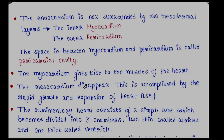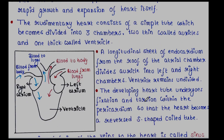The myocardium gives rise to the muscles of the heart. The mesocardium disappears, accomplished by the rapid growth and expansion of the heart itself. The rudimentary heart consists of a simple tube which becomes divided into three chambers: two thin-walled auricles and one thick-walled ventricle. A longitudinal sheet of endocardium from the roof of the atrial chamber divides the auricle into left and right chambers, while the ventricle remains undivided.